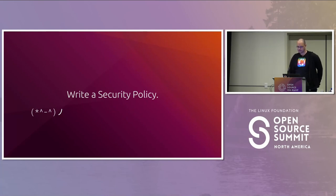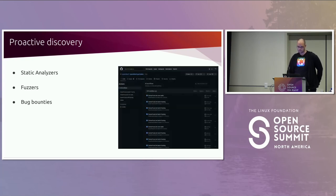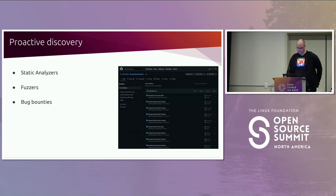The one takeaway is: write a security policy with a way to privately contact your project. You may also want to look for vulnerabilities on your own. Static analyzers are tools that help identify bugs and vulnerabilities — there are many kinds for different tasks and languages. Fuzzers test how programs respond, often to invalid or random input. Links for more information on static analyzers and fuzzers are included in the resources slide.